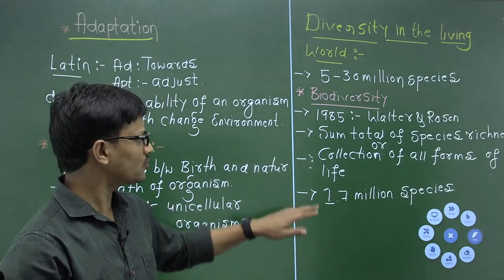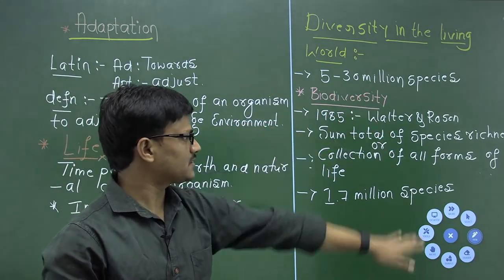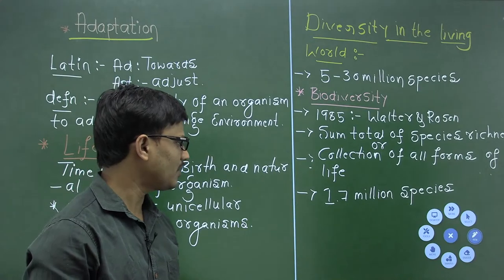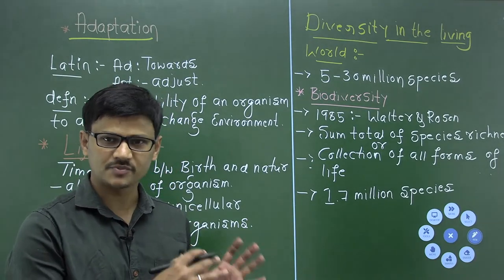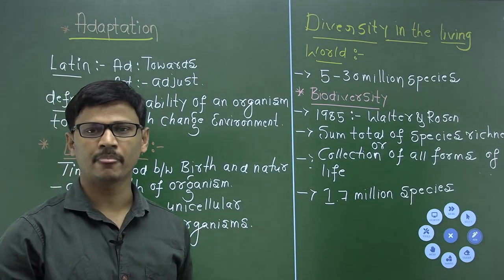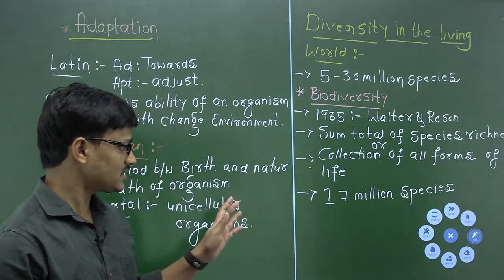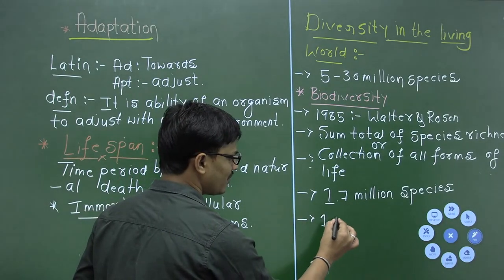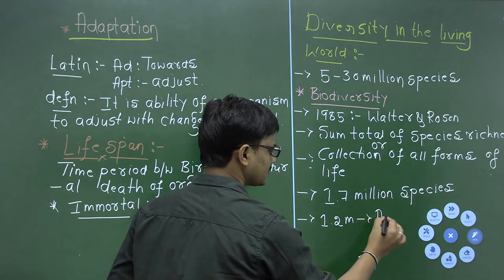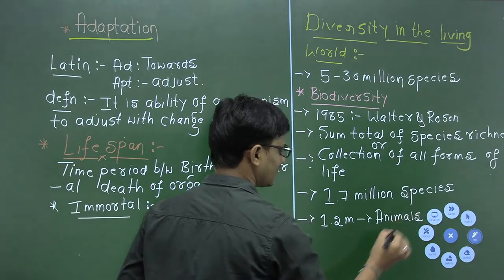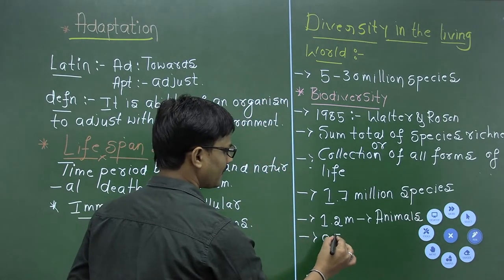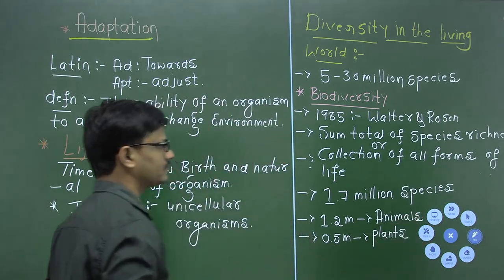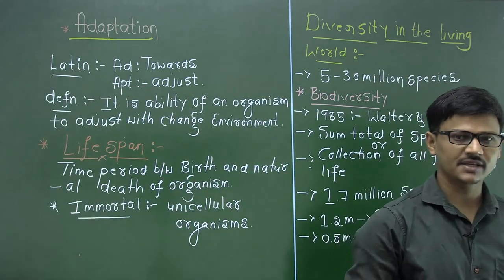Of course, there are 5 to 30 million species on earth, but not all have been studied. Scientists are able to study only around 1.7 to 1.8 million species. Out of the 1.7 million described species, it includes around 1.2 million animals and 0.5 million plants.